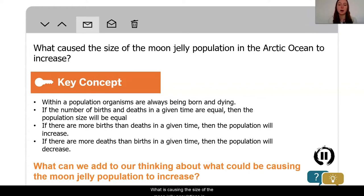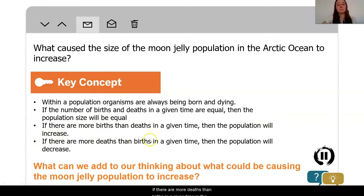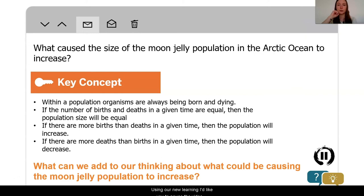What is causing the size of the moon jelly populations in the Arctic Ocean to increase? We know that within a population, organisms are always being born and always dying. If births and deaths are equal in a given time, the population will be stable. If there are more births than deaths, the population will increase. If there are more deaths than births, the population will decrease. So what can we add to our thinking? Pause the video and discuss — what do we know about births and deaths in the moon jelly population because we know that moon jellies are increasing?